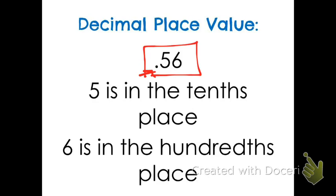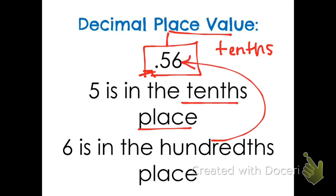Five is in what we call the tenths place. So the first spot is what we would call the tenths place. Then I have the six which is in the hundredths place. Make sure you have this written down and have each of the place values labeled.